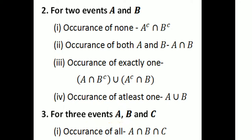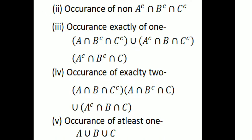For three events A, B and C: occurrence of all events is A intersection B intersection C. Then occurrence of none is A complement intersection B complement intersection C complement. Then occurrence of exactly one is A intersection B complement intersection C complement, union A complement intersection B intersection C complement, union A complement intersection B complement intersection C.